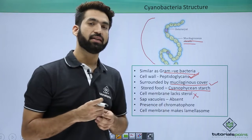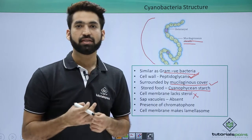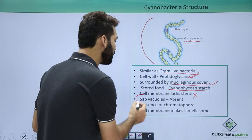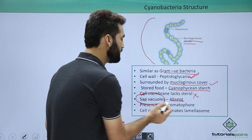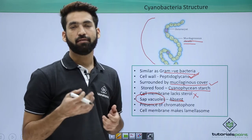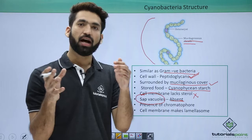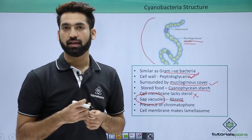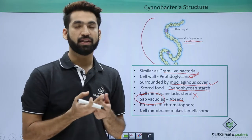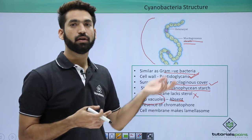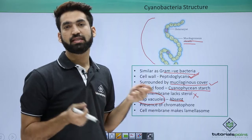When you talk about sap vacuoles, I've already told you that sap vacuoles in Monera members are always absent. They can have chromatophores because they have to deal with photosynthesis, and for photosynthesis they should have chlorophyll A present somewhere. In higher plants, chlorophyll A is present in chloroplasts, but being prokaryotic in nature, they don't have chloroplasts.